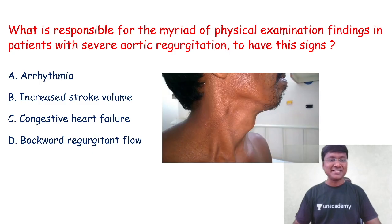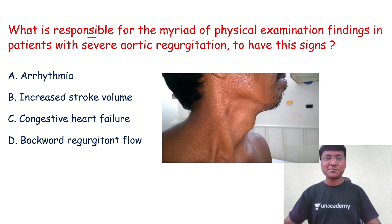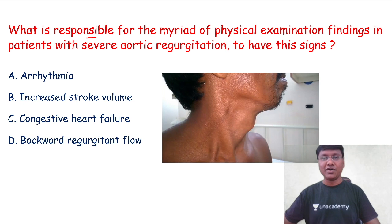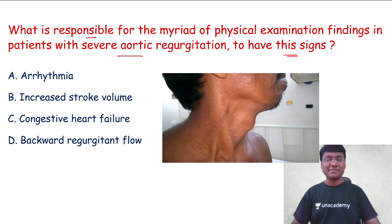Having said this, let me start with the clinical sign of the day. The question is: what is responsible for the myriad of physical examination findings in patients with severe aortic regurgitation? Let me just play the video first, see the options, and then answer the question.